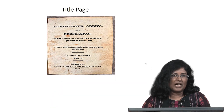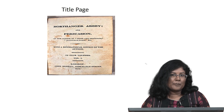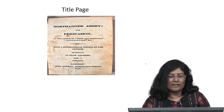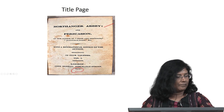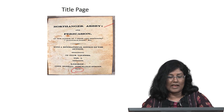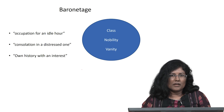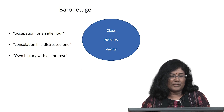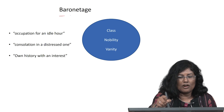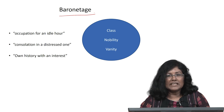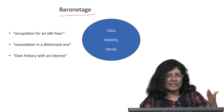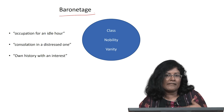This is the title page of Persuasion, which was published with Northanger Abbey. So this came out in 1818. And as you can see, there is no mention of Jane Austen's name on the title page. The book begins with a reference to another book which is called Baronetage, a record of all the nobility and their descendants and heirs and who married whom.